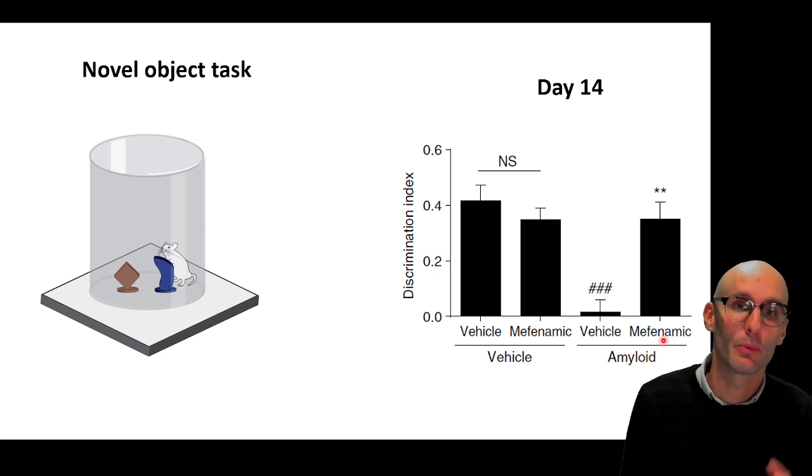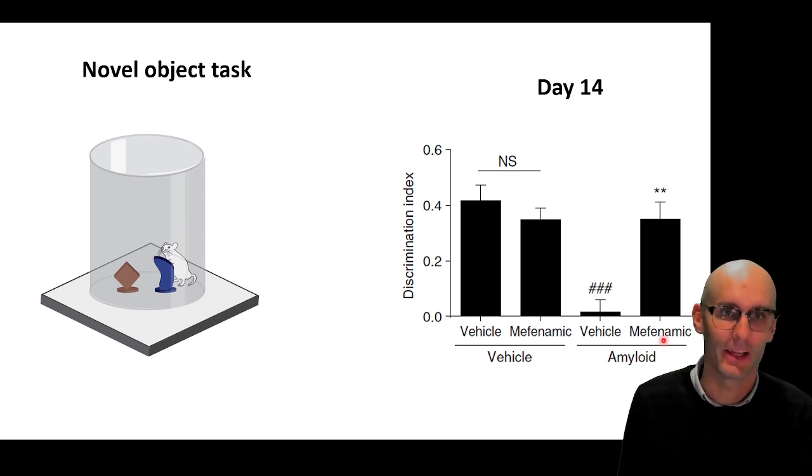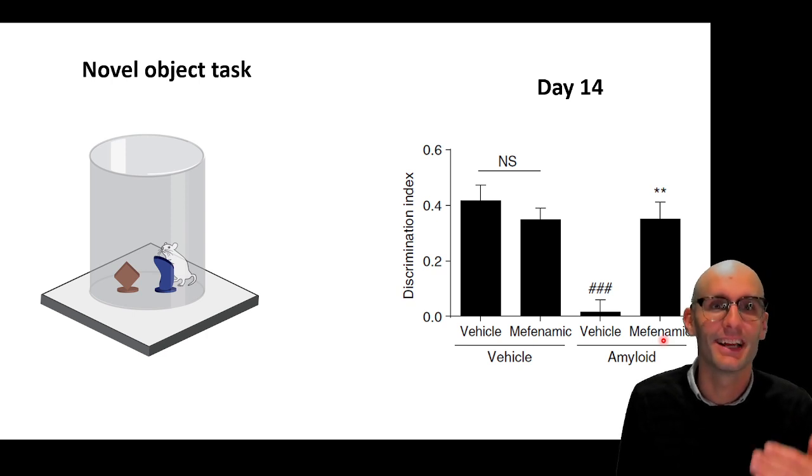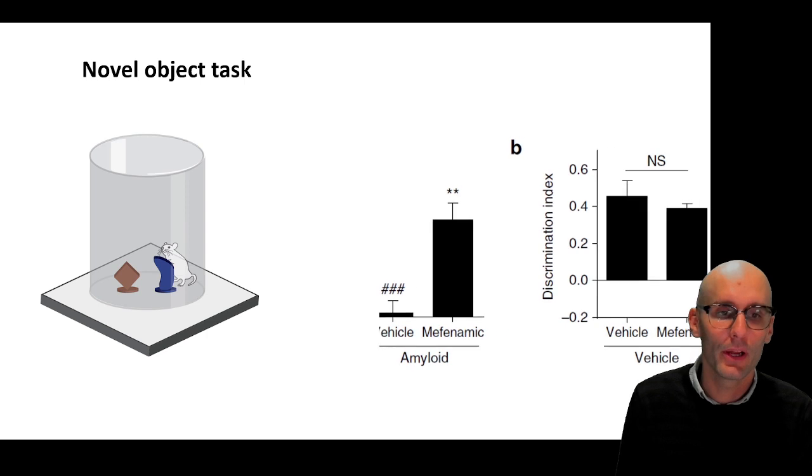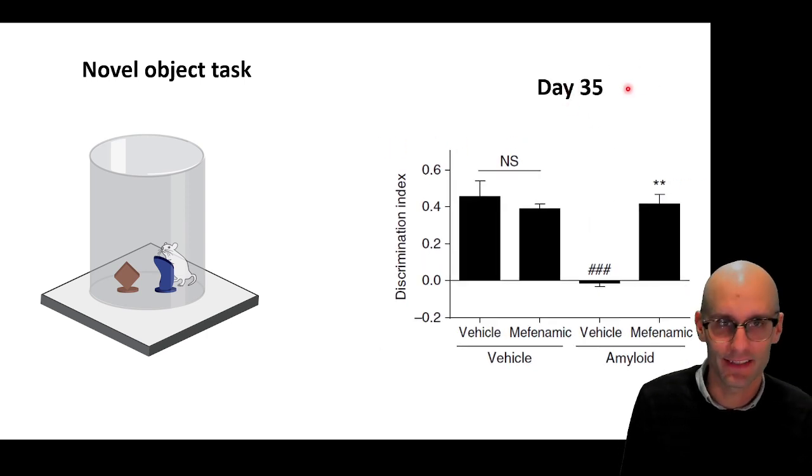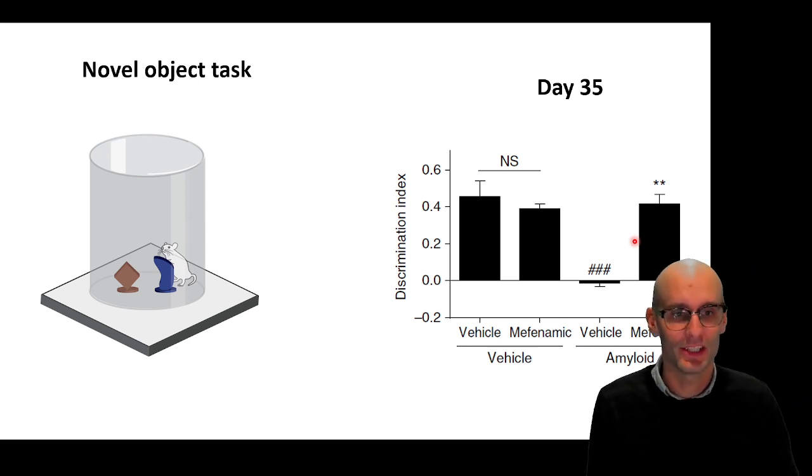And when we gave them mefenamic acid, we reversed them back to that control phenotype so they could remember. So we blocked the memory deficits induced by amyloid. And this was 14 days after injection. We also did it again 35 days after injection, and we got the same results. So it's a long lasting effect, this mefenamic acid injection.